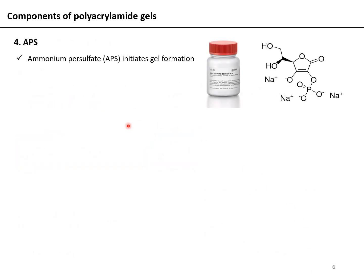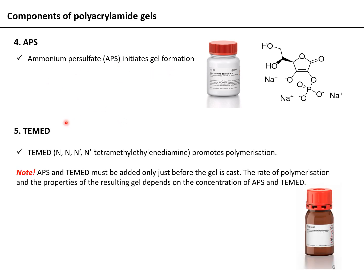Ammonium persulfate (APS) initiates gel formation, and TEMED promotes polymerization. Note that APS and TEMED must be added only just before the gel is cast — the moment you add them, the solution begins to solidify. So quickly mix them in and pour the solution between the gel plates to allow solidification in the desired shape. The rate of polymerization and properties of the resulting gel both depend on the concentration of APS and TEMED. Note: TEMED smells like rotten eggs, so be careful.